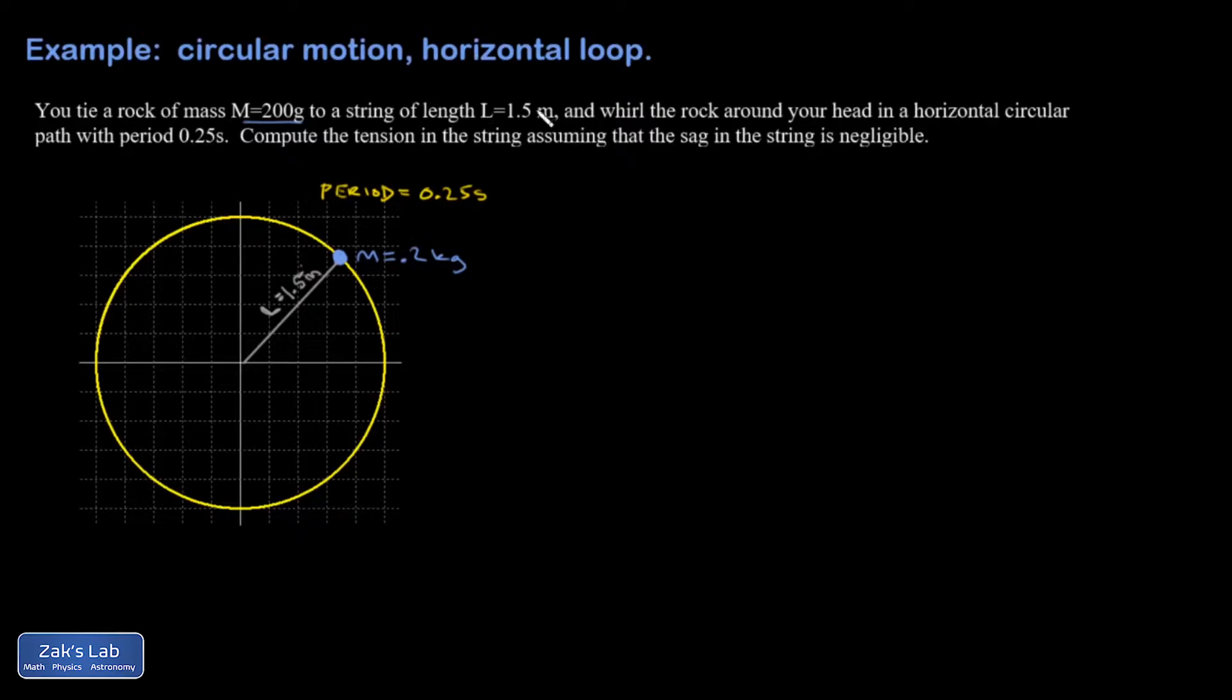And just a quick note on this thing that I had to say at the end. I said assuming the sag in the string is negligible. So this is an overhead view of someone swinging a rock around on a horizontal path. If I take a side view of this, there will always be some degree of sag in the string for a good reason.